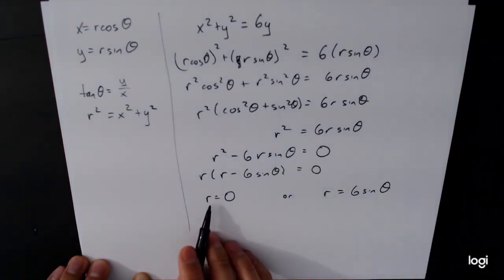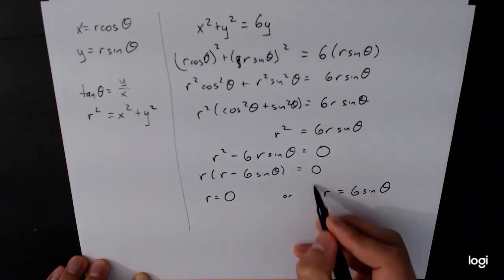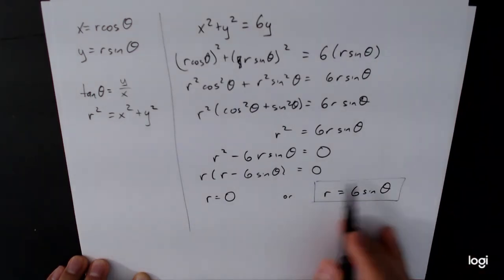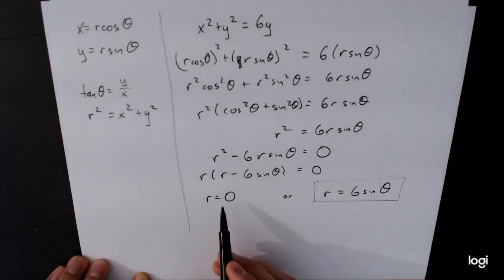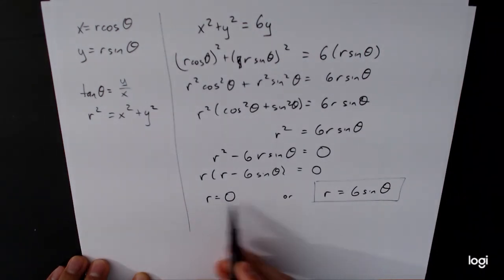Well the r equals zero case, that gives us just a point at the origin. r equals 6 sine theta, this actually gets us that full circle. Now both of these do work. This point happens to be on the circle as well. But this is the interesting part of it.